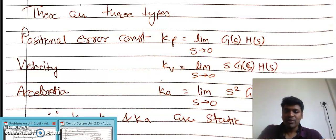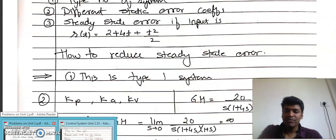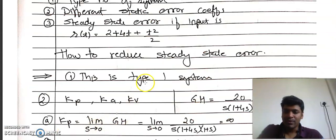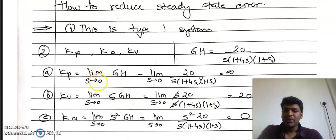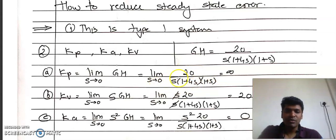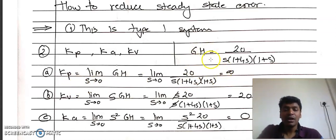Using this formula, we can find the value of Kp. Kp = lim(s→0) G·H = lim(s→0) 20 / [s(1+4s)(1+s)]. Just substitute s=0: the denominator becomes 0, so 20/0 = infinity. The positional error constant Kp is equal to infinity for this system.